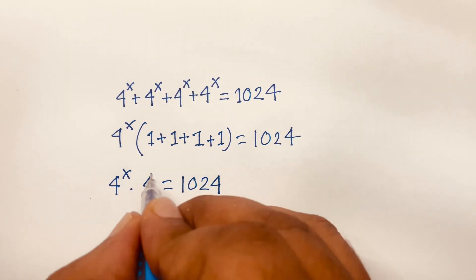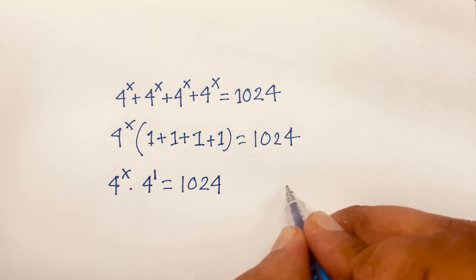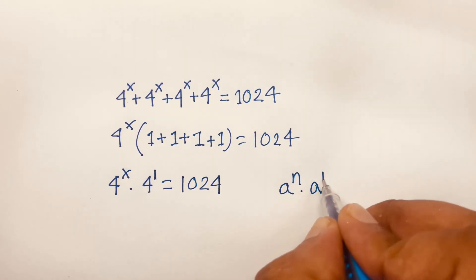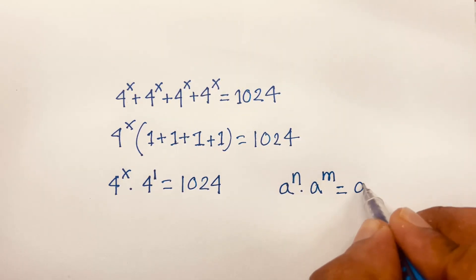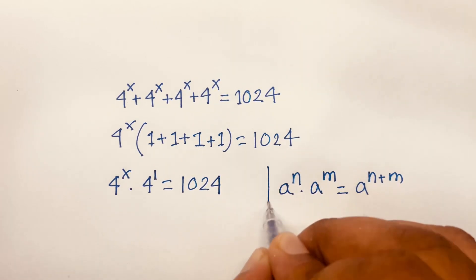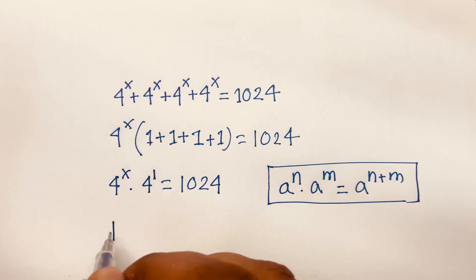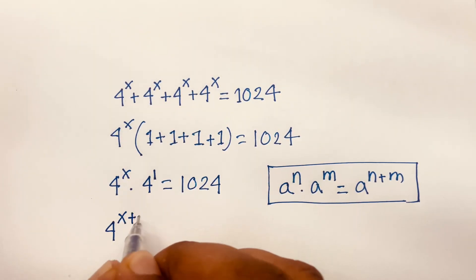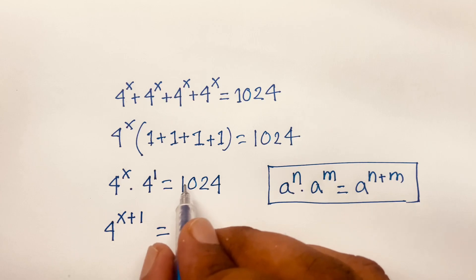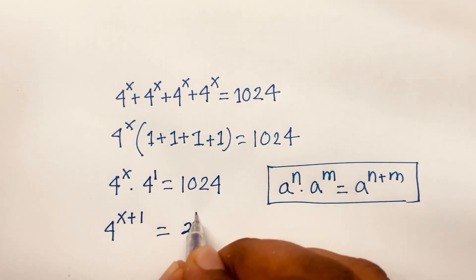The exponent of that 4 is 1. Using the rule a to the power n times a to the power m equals a to the power n plus m, we can write this as 4 to the power x plus 1 equals 1024, which is 2 to the power 10.